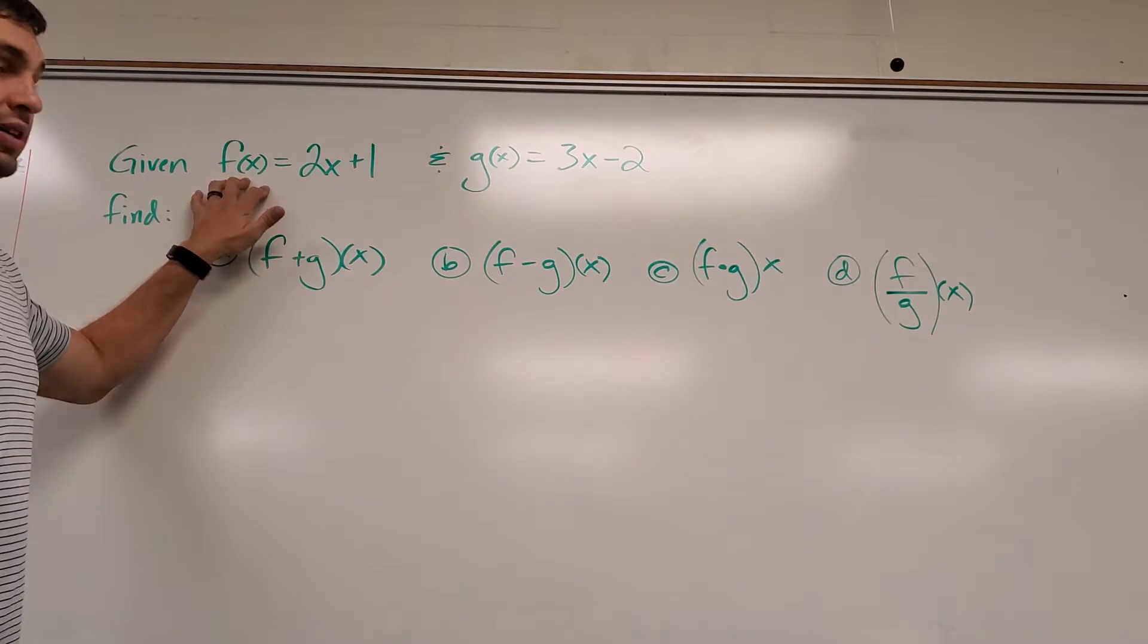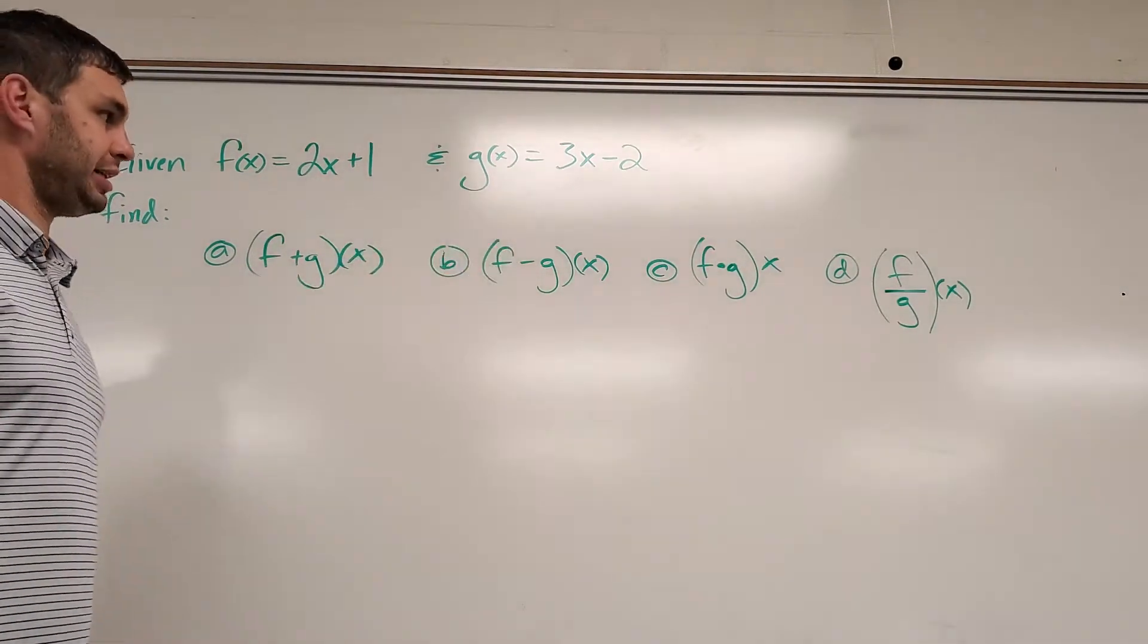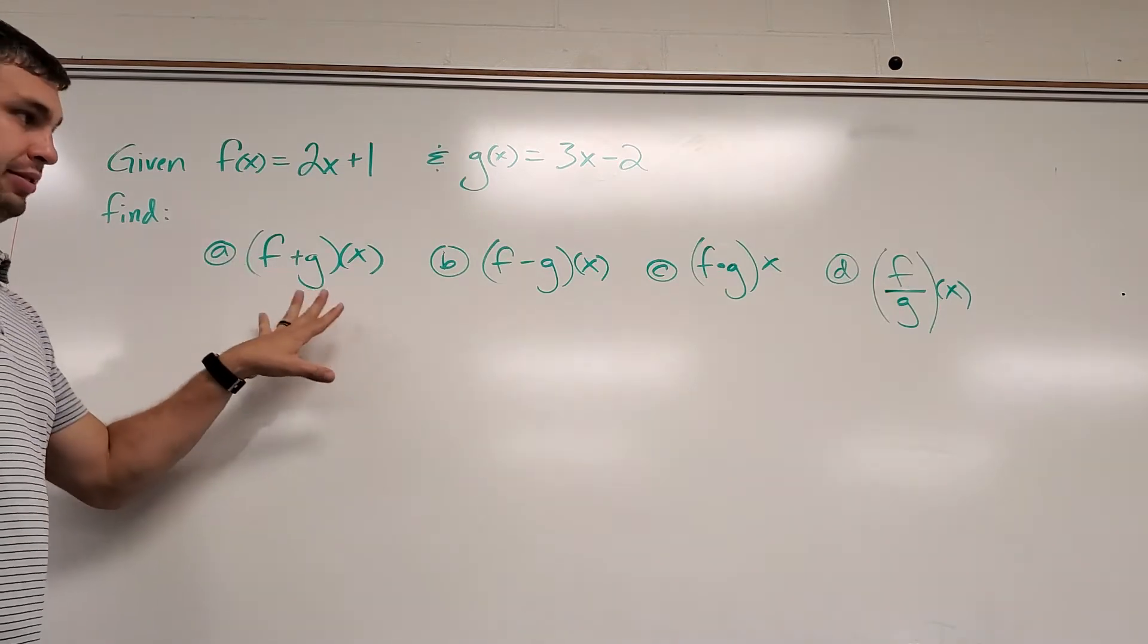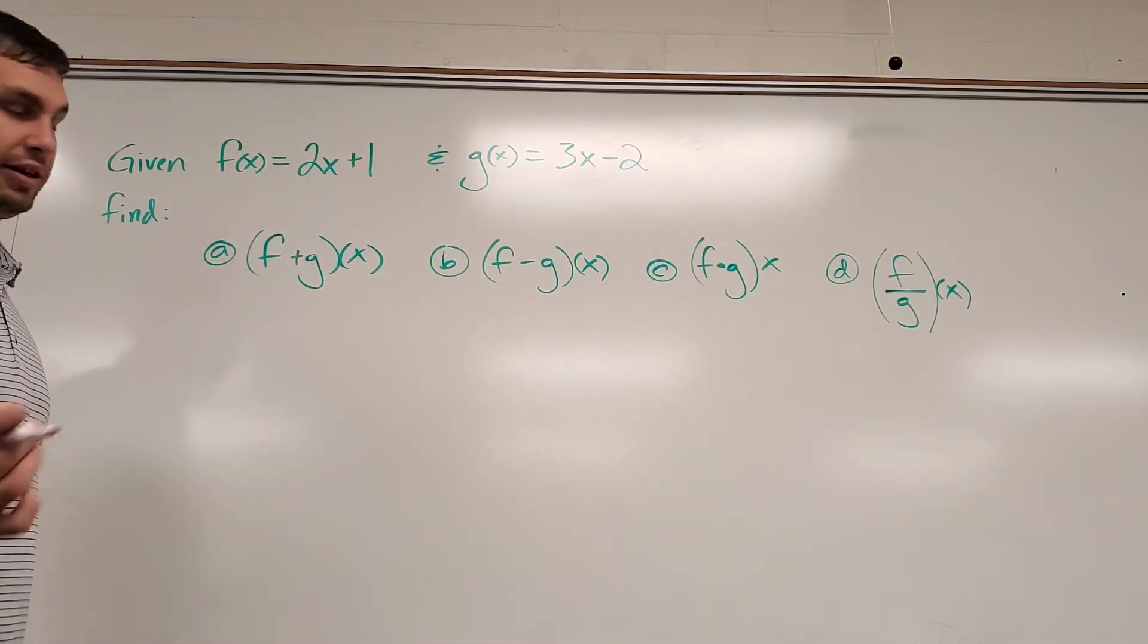This problem says given f of x equals 2x plus 1 and g of x equals 3x minus 2, find these four different examples. Let's start with f plus g of x.